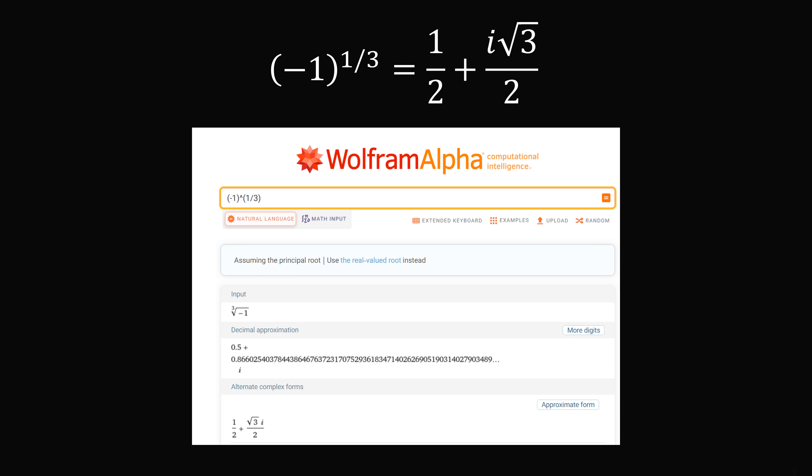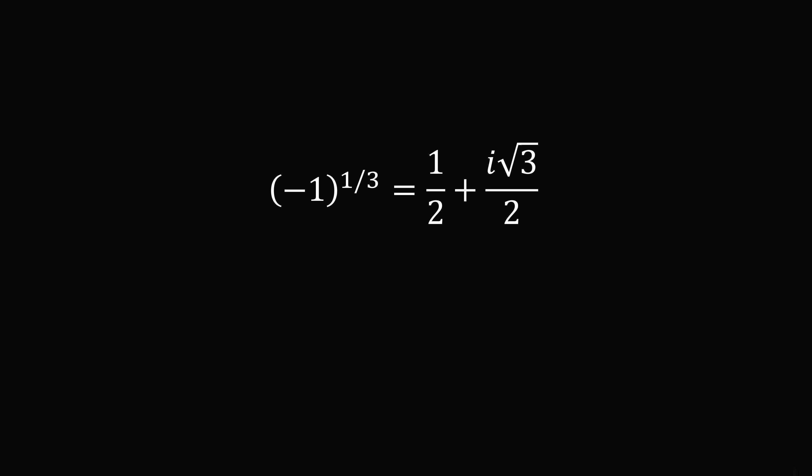You get the complex number 1 half plus i root 3 over 2. There's also some notation that Wolfram Alpha is assuming the principal root. So what exactly is going on? We have negative 1 raised to the fractional exponent 1 over 3 is a complex number and the cube root of negative 1 is equal to negative 1. And amazingly, these two things are not the same output.